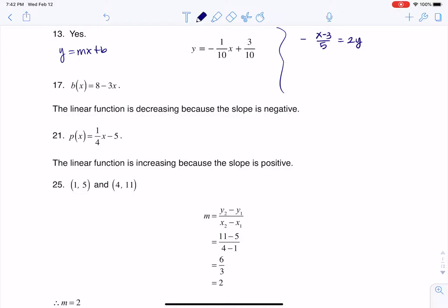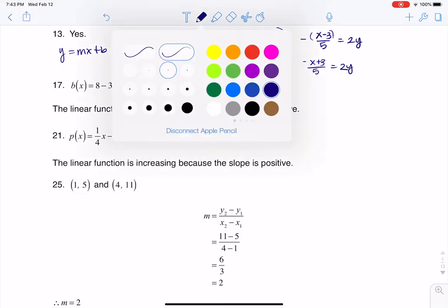The first thing I'm going to do is I'm actually going to distribute this negative to my numerator so I'm going to make this negative x plus 3 over 5 equaling 2y and then I'm going to divide that 5 out.